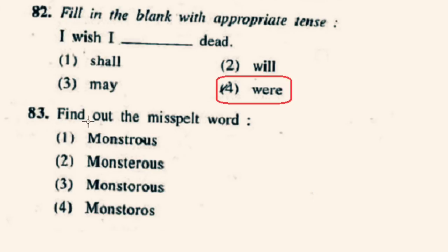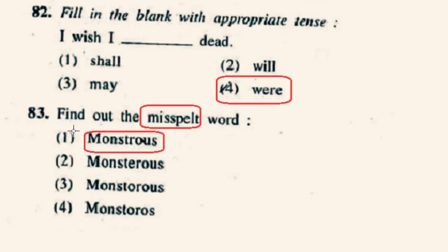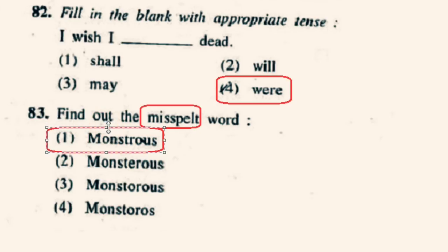Question number 83: Find out the correctly spelt word. The correctly spelt word is monstrous, given in option 1st. The spelling is M-O-N-S-T-R-O-U-S, which means distorted and unnatural in shape or size.